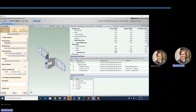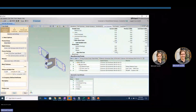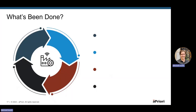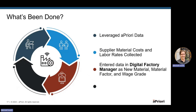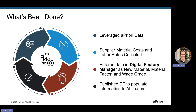Now we are arriving at our increased and final should cost estimate for this part. Just trying to summarize what we did in this example: we are sourcing a part, leveraging Apriori, and trying to update information as we go based off our suppliers' rates. We've leveraged Apriori data, discussed with our supplier how they are quoting our part, and through those conversations they've given us material costs and labor rates. We've entered this in the digital factory manager — we've added a new material, added a material factor based off our volumes, and created a new wage grade to account for labor rates. In doing so through the digital factory manager, we've published and made this information available to all users within the Apriori environment.